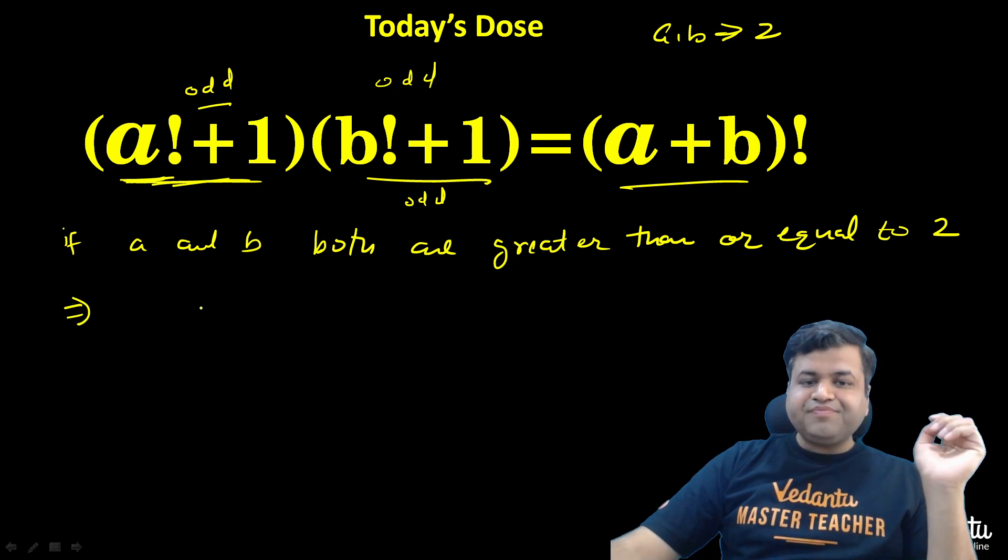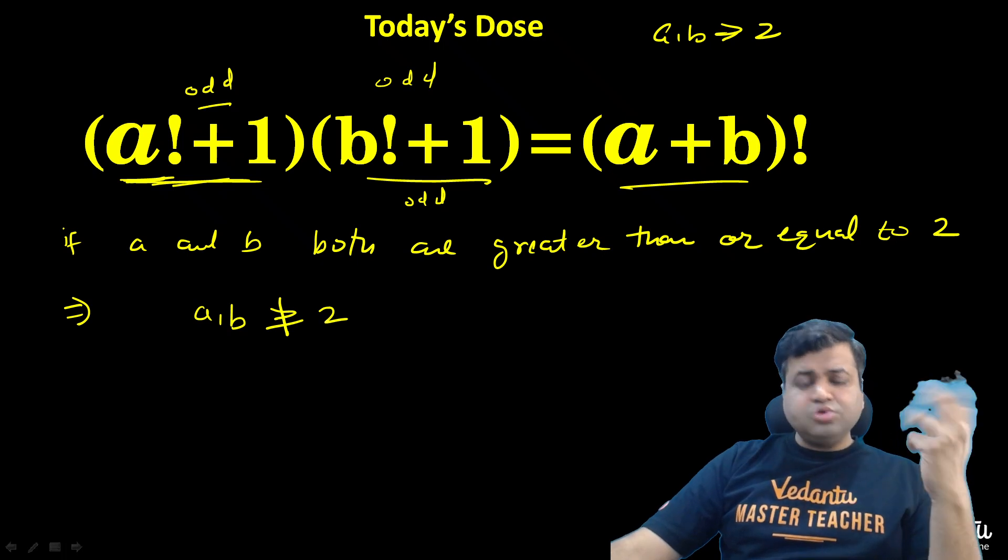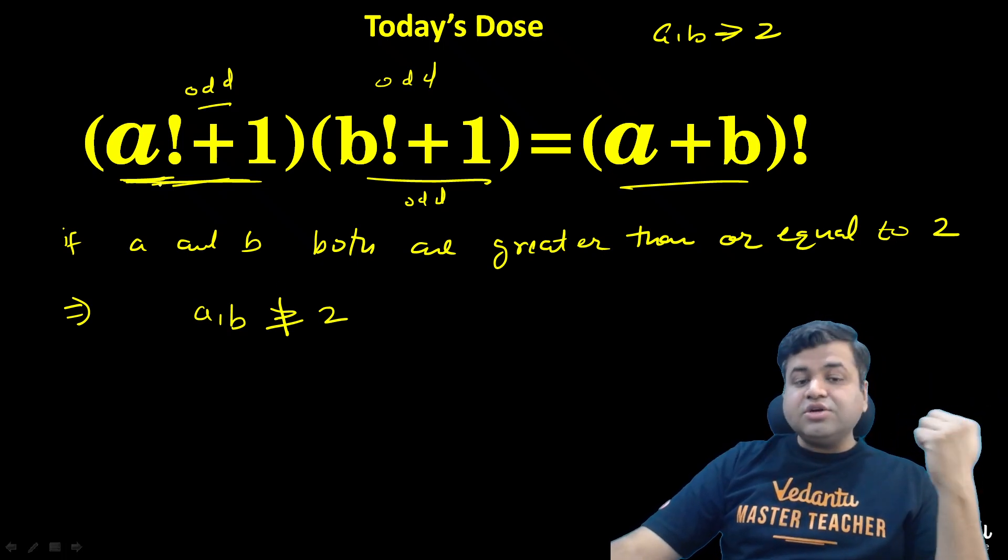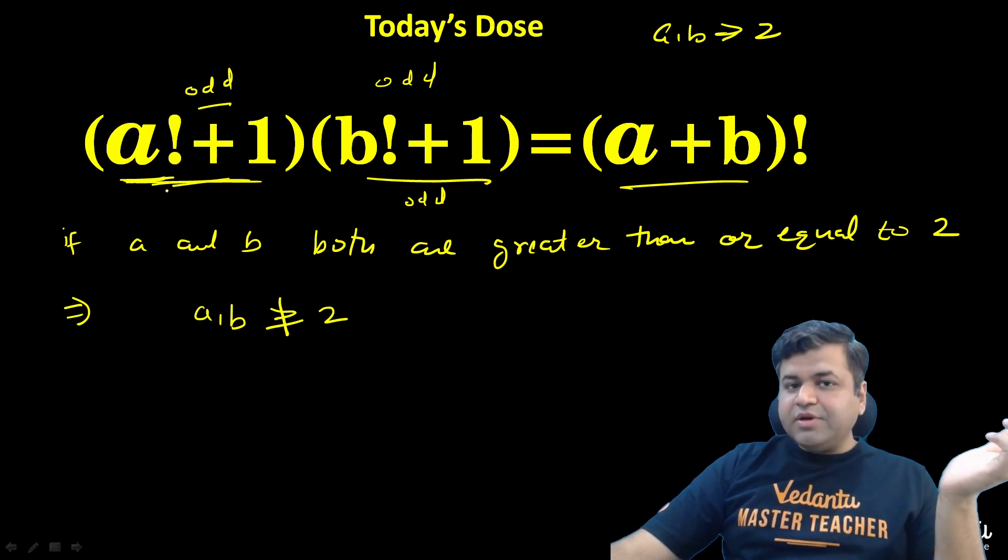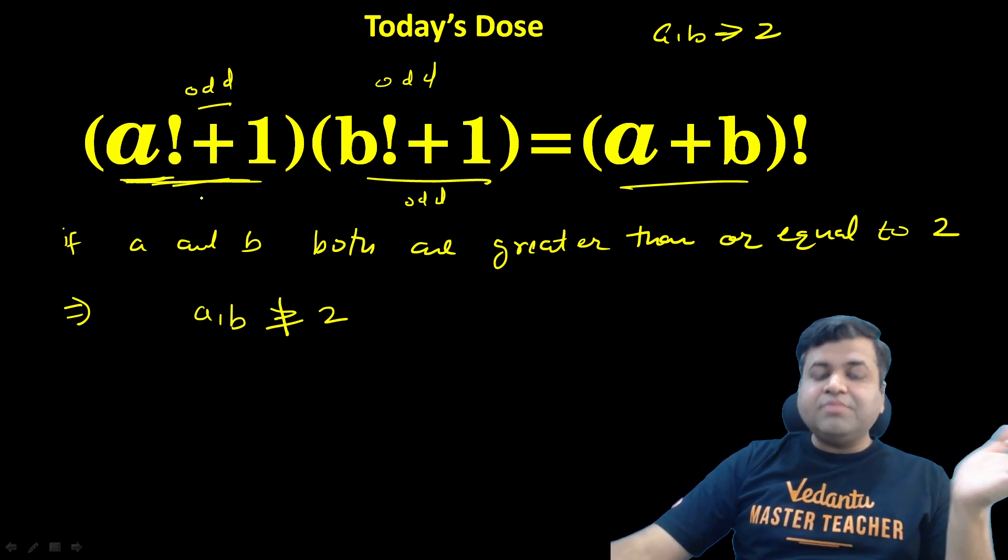So that simply implies that a and b both simultaneously cannot be greater than or equal to 2. At least one has to be 1 or 0. Then left hand side will be even and right hand side will be even.